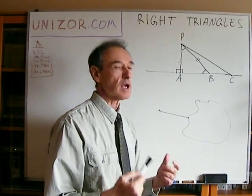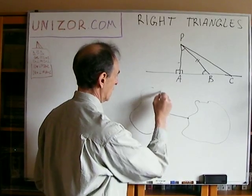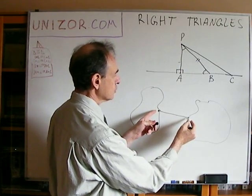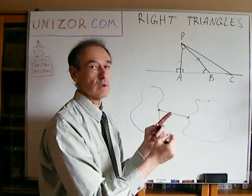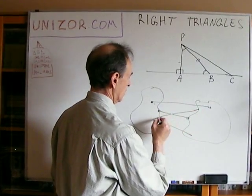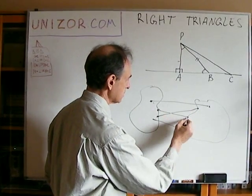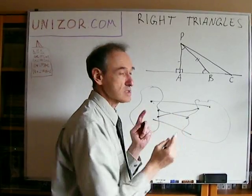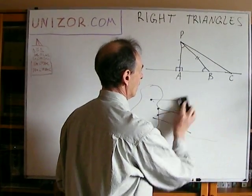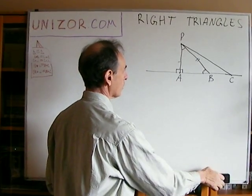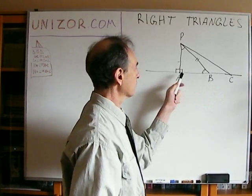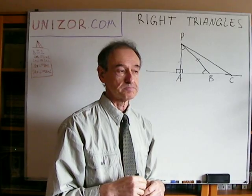If this object is a straight line, then it's the perpendicular, because the perpendicular is the shortest distance. There is also a concept of the distance between two objects — we choose two points, one on each object, such that the segment between them has the shortest length among all other segments connecting any pair of points on the two objects.